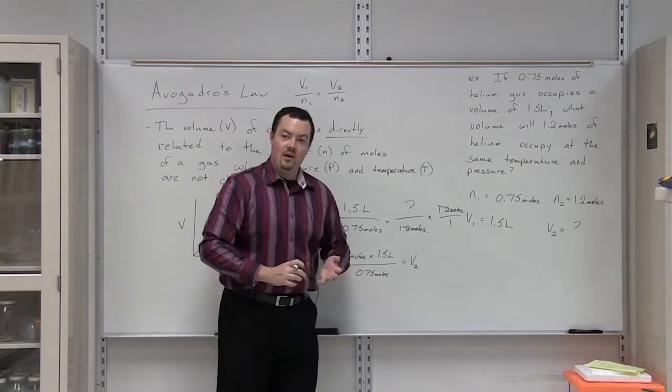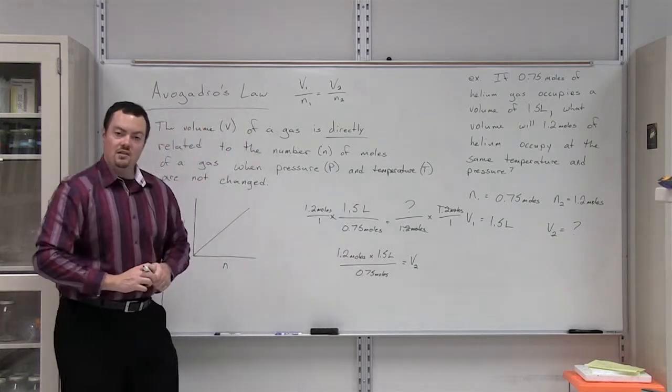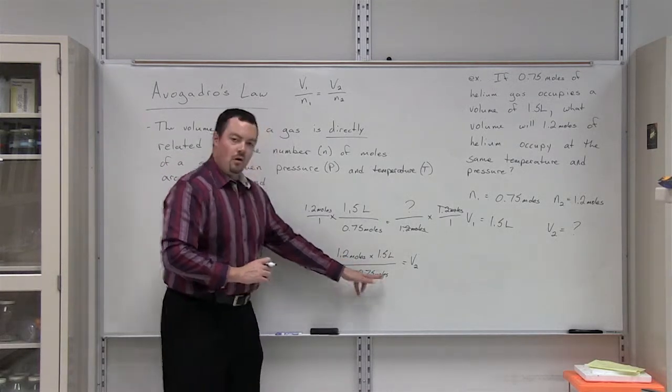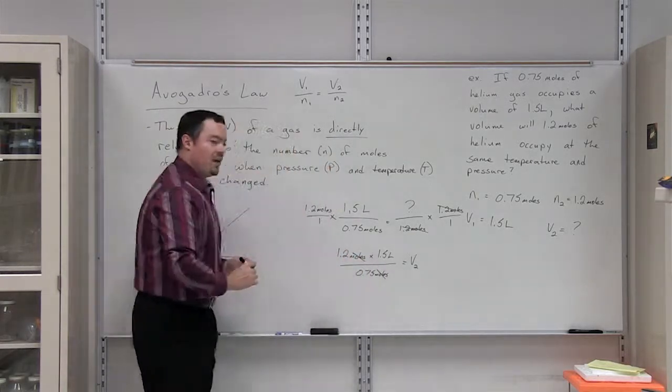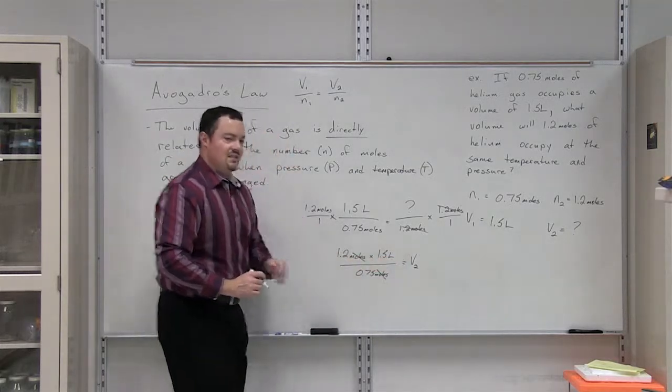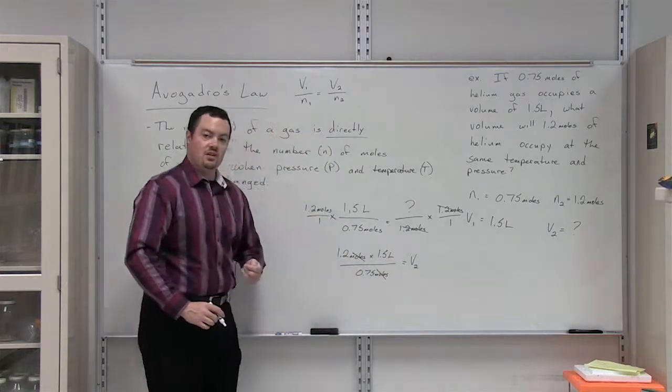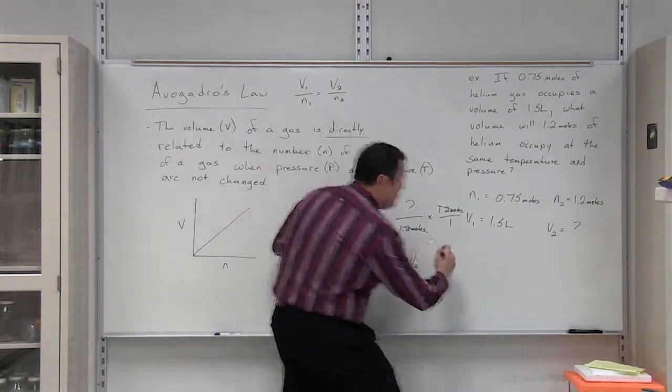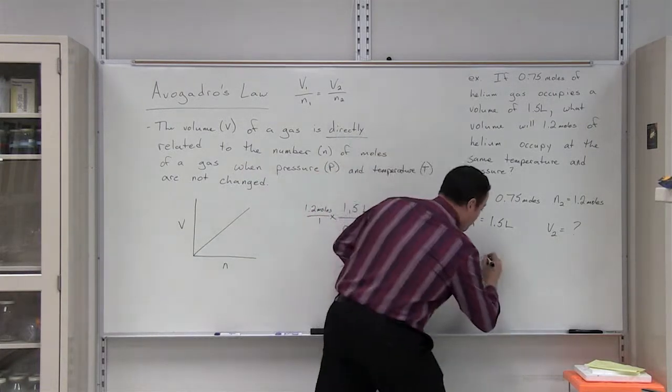In order to ensure that we set up our problem correctly, we can determine what units can cancel out. You see here we have moles over moles. Those units will cancel out. The only unit that we are left with is liters, and that is what we expect, because volume is measured in liters. So we input this, and we solve for V2, which comes out to be 2.4 liters.